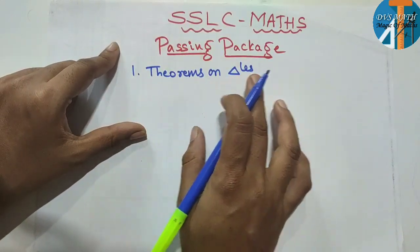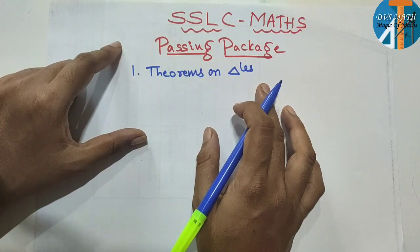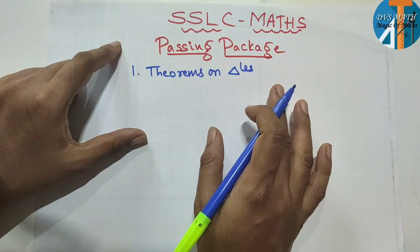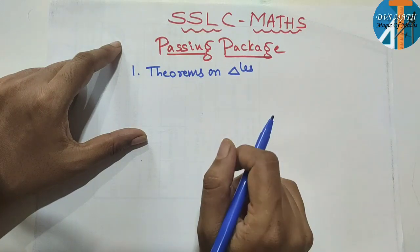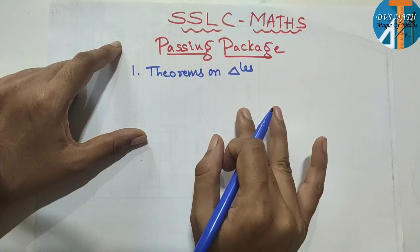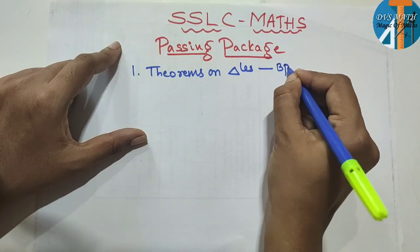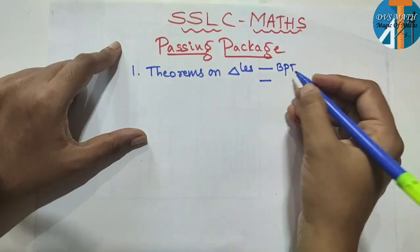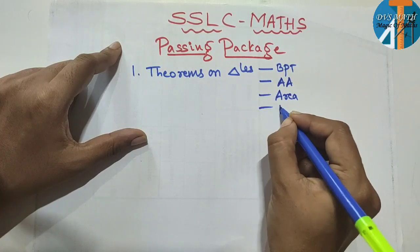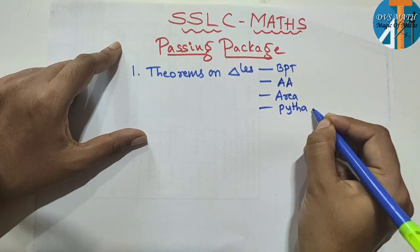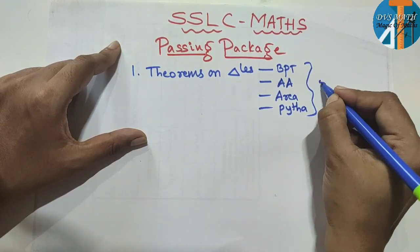First, Theorems on Triangles. In triangle lessons, we are going to discuss the lesson of Pythagoras theorem. Pythagoras theorem is going to be 5 marks. The lesson of this theorem is BPT. It is not AA Similarity, it is not Pythagoras. This is 8. The lesson of this is 5 marks, and it is 4 marks.